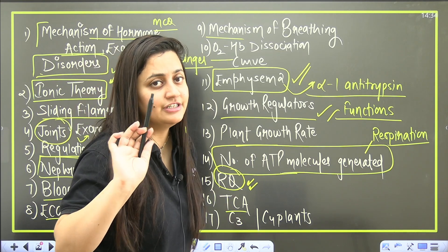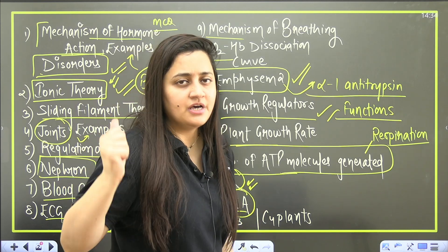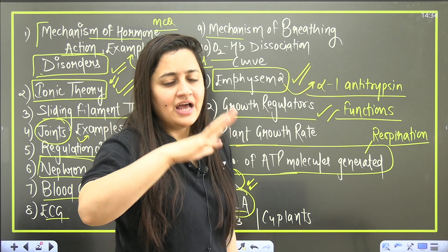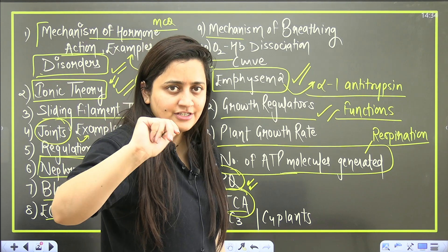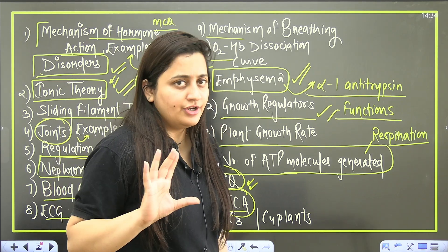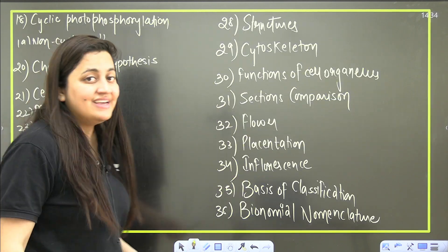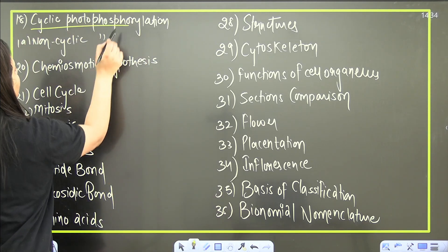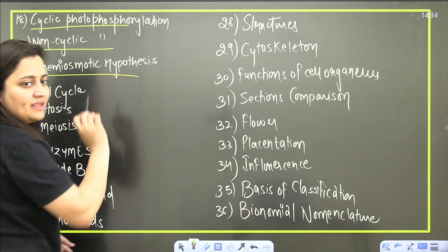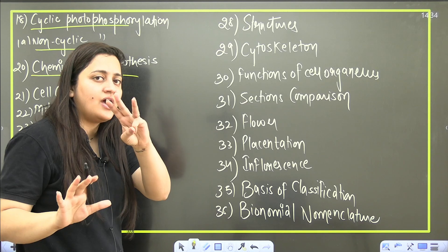Then RQ value, respiratory quotient, tricarboxylic acid cycle - that is your citric cycle. In citric cycle what you need to focus - how many steps are of substrate level phosphorylation and how many steps your NADH and your FADH will form. Then C3, C4 plants - obviously that comparison is important. The cycles are also important - cyclic photophosphorylation, non-cyclic, chemiosmotic hypothesis as well.